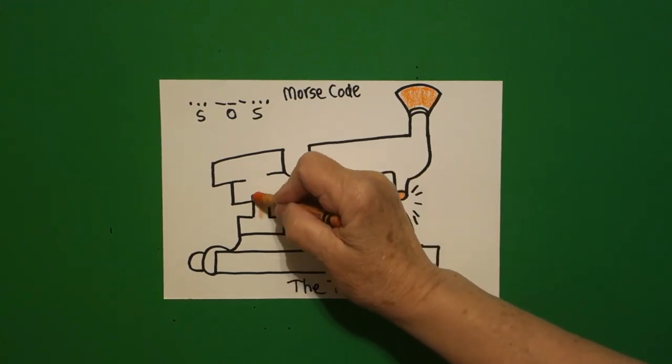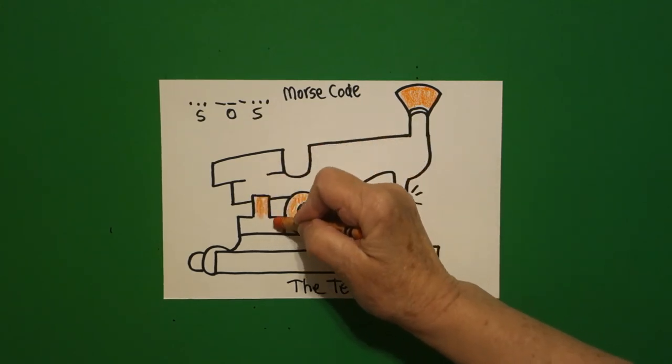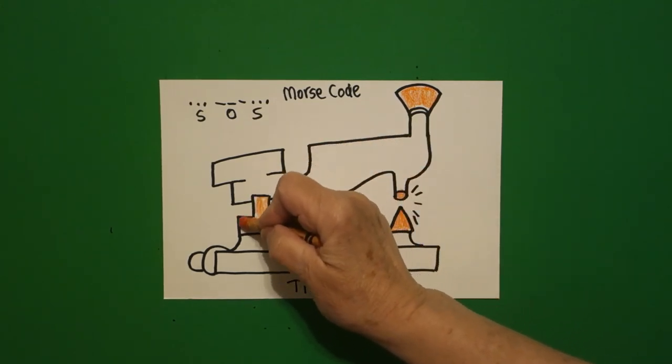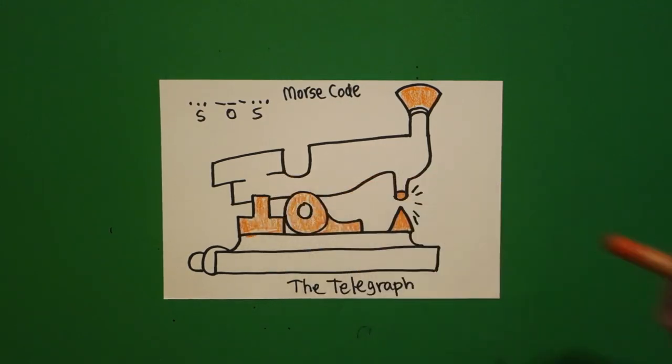Okay, this is all the mechanical gears and whatever that put it all together. Now, when they discovered how to do the telegraph and Morse code, it just revolutionized long distance communication. So like we have smartphones, this was theirs.